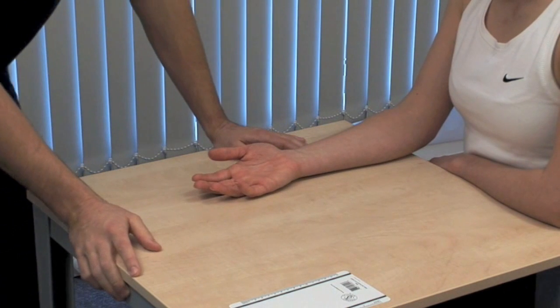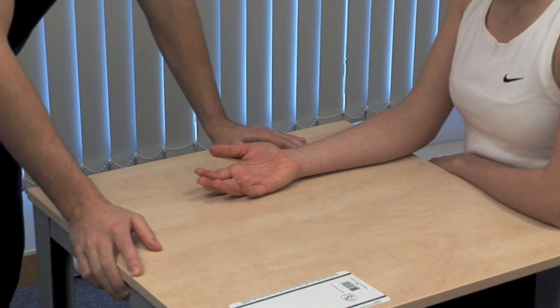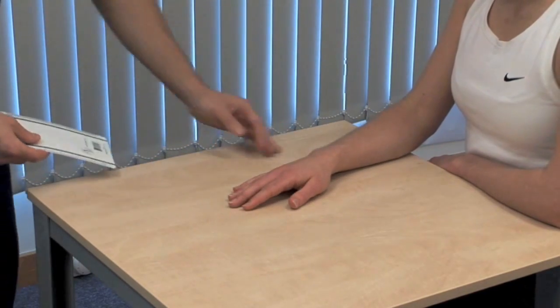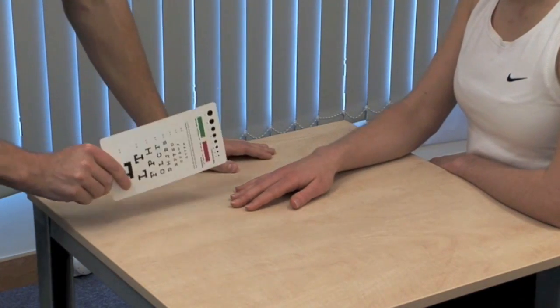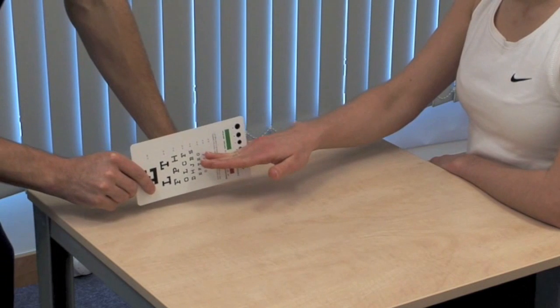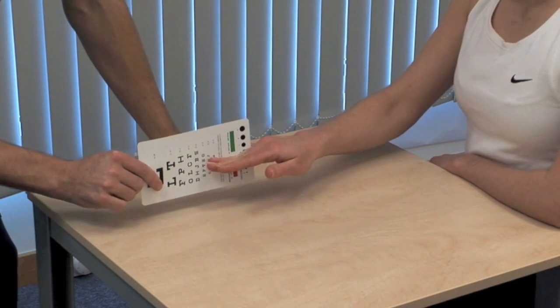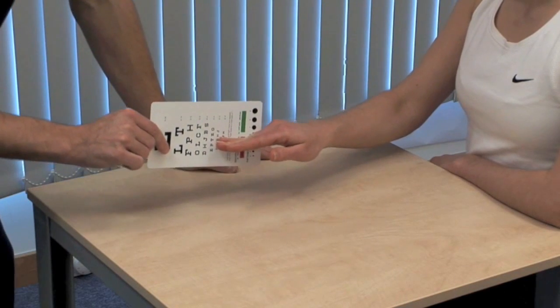Next, we test the muscles supplied by the ulnar nerve. And roll your hand back over. And now I want you to grip the card between your little and ring finger. And stop me from pulling the card away. Testing adduction of the little finger. Relax.